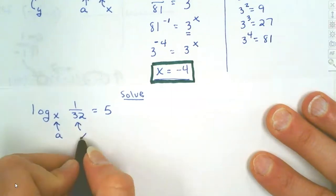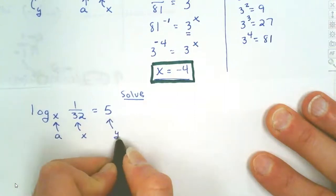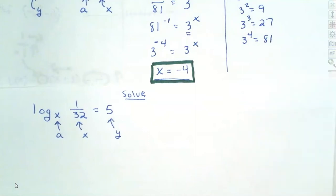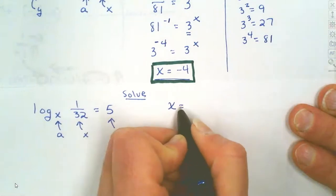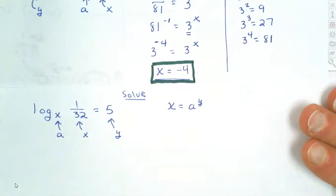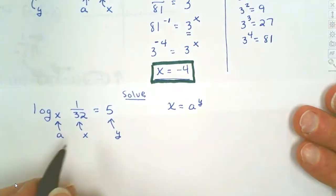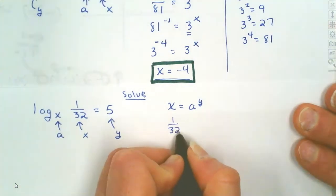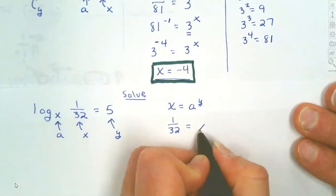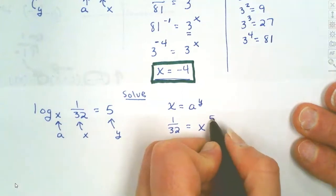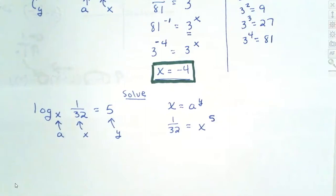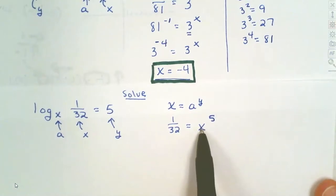The 1 over 32 is your x value, and the 5 is your y value. It transforms into x equals a to the y power. So 1 over 32 equals the unknown base — our a — raised to the 5th power. We need to either make sure the bases are the same or the exponents are the same. Since we want to find this base x, we need to make sure both sides are raised to the 5th power.